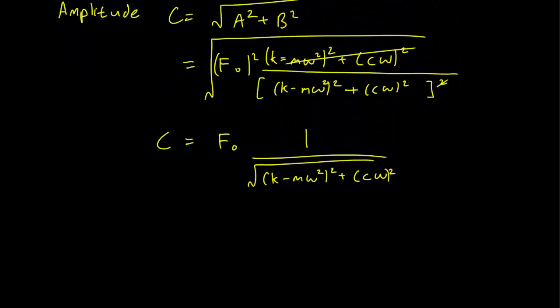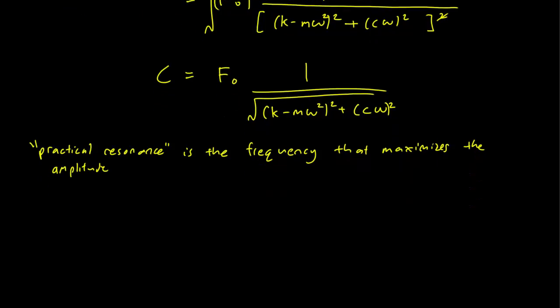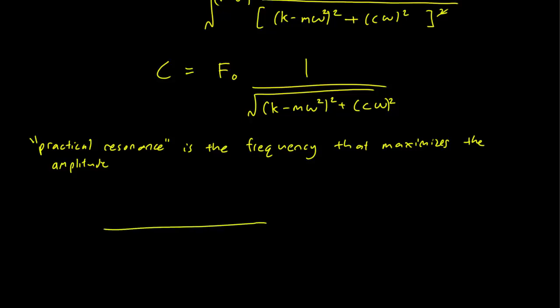So we don't have resonance like we did in the case where there was no damping constant. But we say the practical resonance is the frequency that maximizes the amplitude. So what's going to happen is that as the omega changes, you'll see the amplitude is going to look something like that. And this value is called the practical resonance.